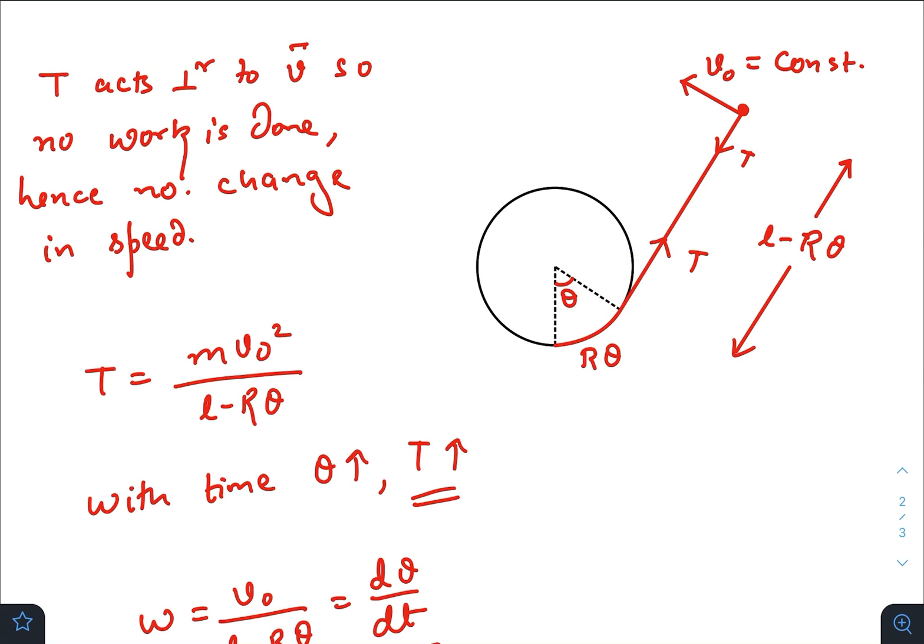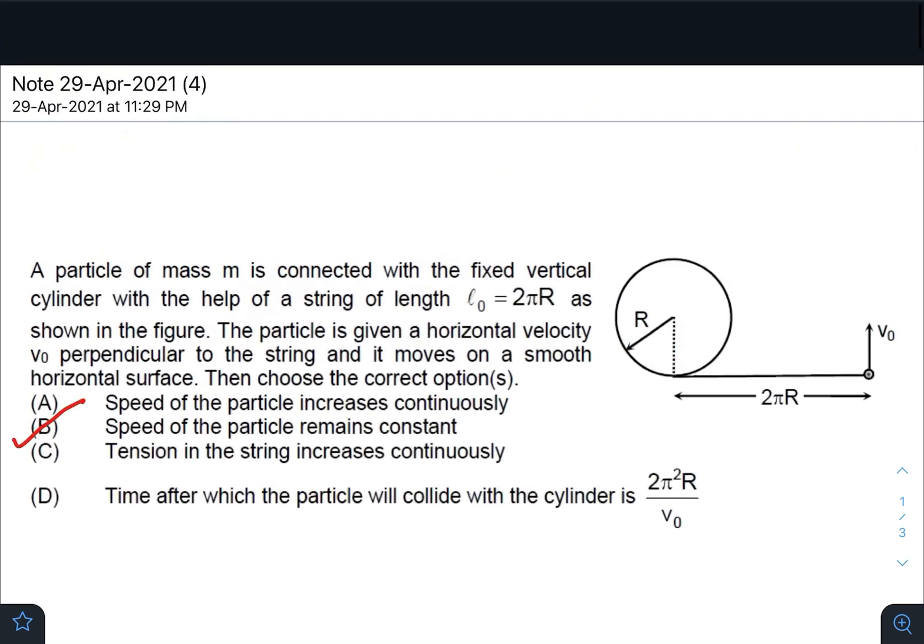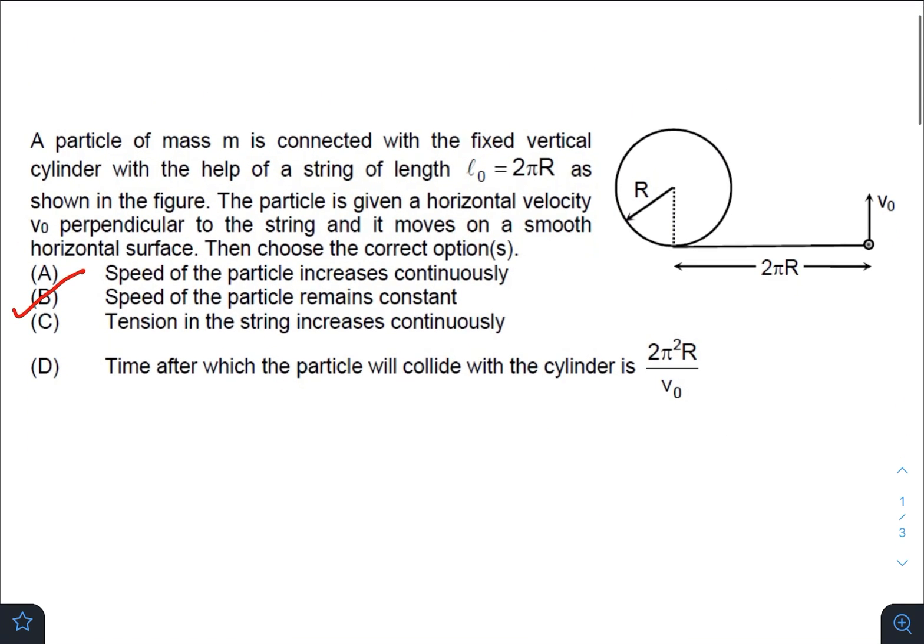Now this particle is performing a circular motion with respect to this point. So we can write T equals mv₀² divided by the instantaneous radius. So with time θ is increasing, so this denominator is decreasing and tension is increasing.